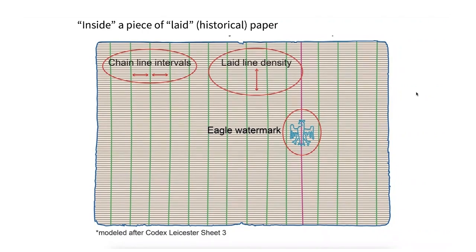The chain lines in the vertical direction, the laid lines in the horizontal direction, and they would often annotate it and decorate it with something that proved the authenticity of the paper. We are the eagle paper manufacturers, for example.